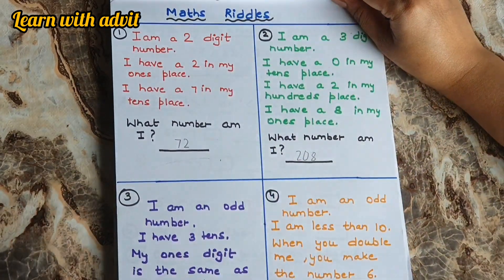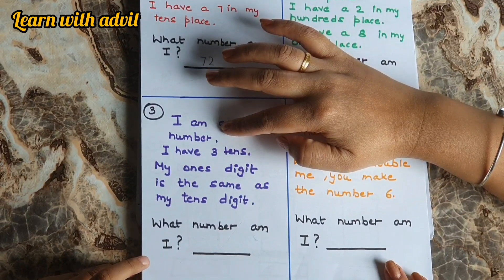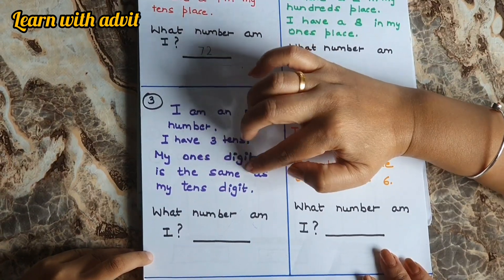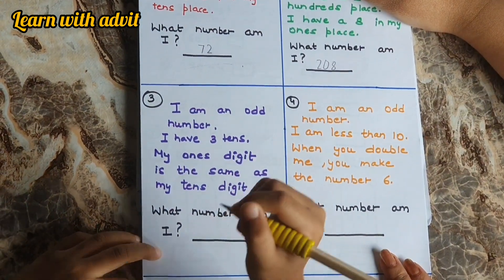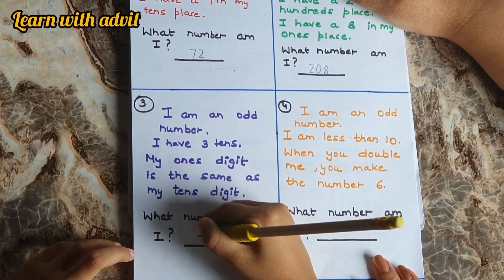I am an odd number. I have 3 tens. My ones digit is the same as my tens. What number am I? What number am I? 33. Very good.